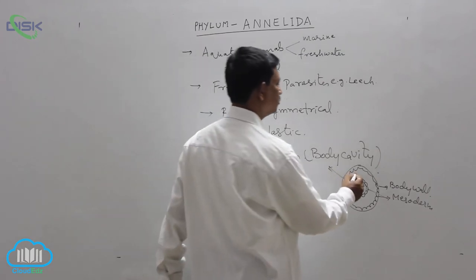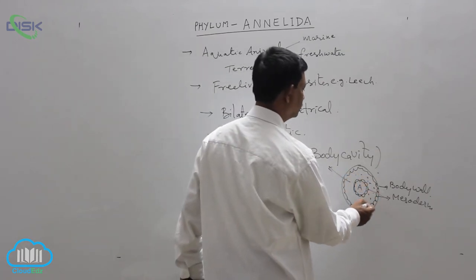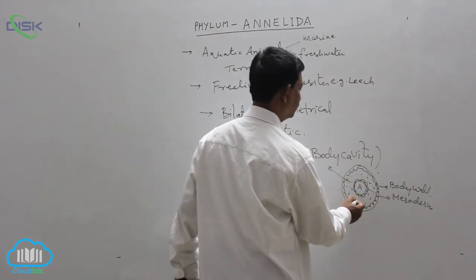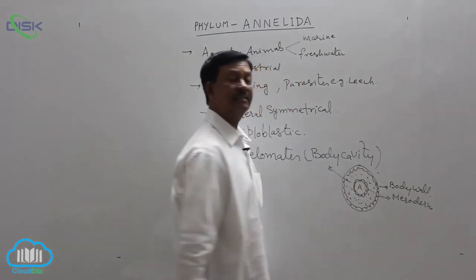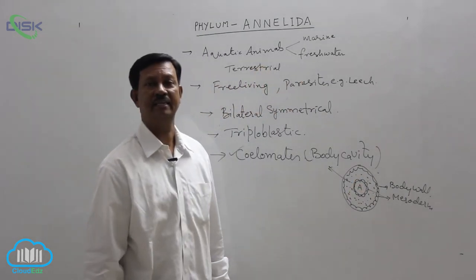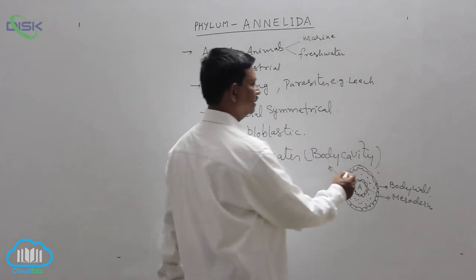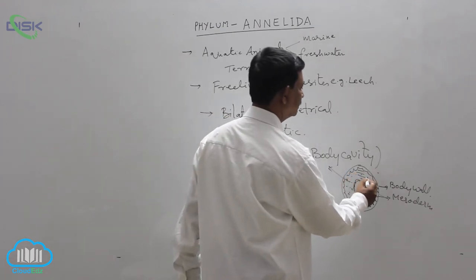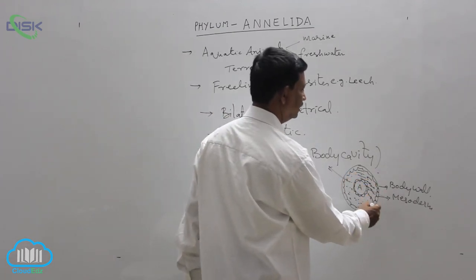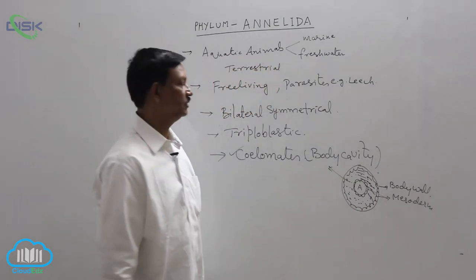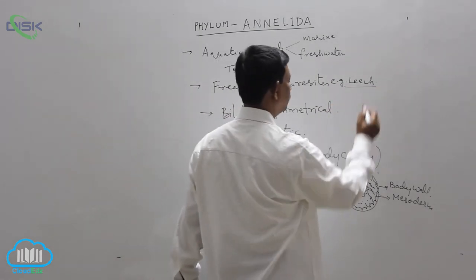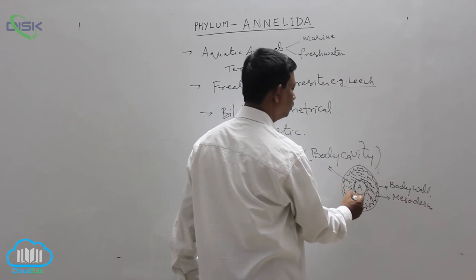This cavity is also filled with some fluid. It is known as the coelomic fluid. It acts as the hydrostatic skeleton. In some animals, this is filled with parenchyma. In some animals, it contains the botryoidal tissue. For example, in leech, body cavity is filled with botryoidal tissue.